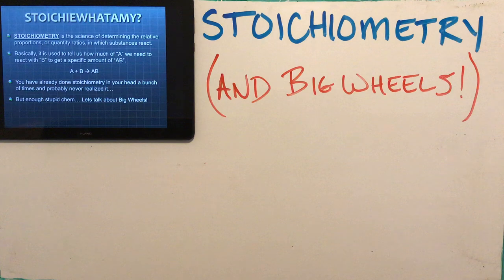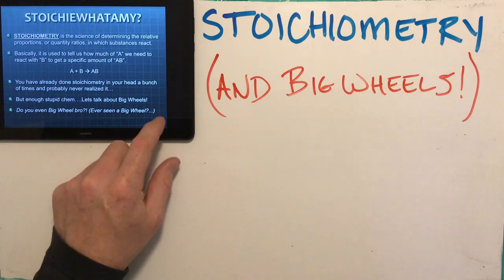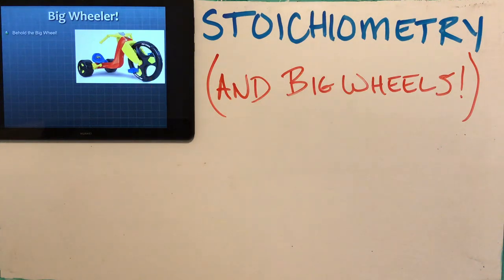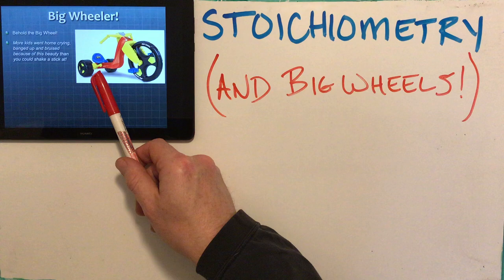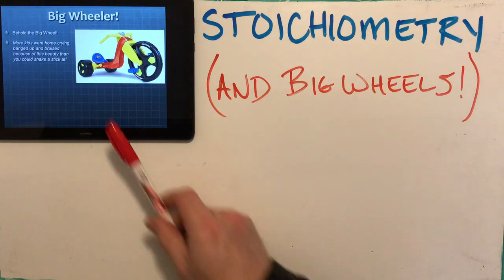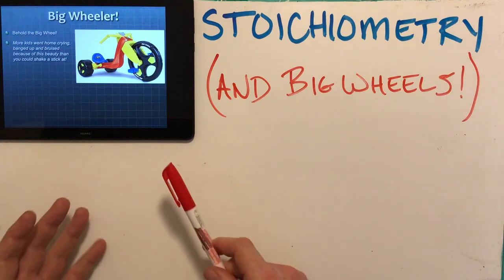Enough of that silly chem stuff — let's talk about the big wheel, the real reason we're here today. Have you ever seen a big wheel before? It was a toy big in the 70s and 80s. This is what a big wheel looks like, and it was an awesome toy. This thing sent more kids home crying, bruised, scraped, to the emergency room than probably any other toy in the history of mankind. And this brake would actually spin you out — newbies would hit it and end up sideways going down a hill. Notice there are no seat belts on said big wheel.